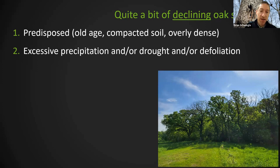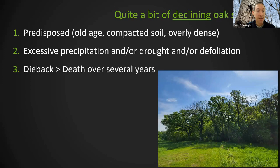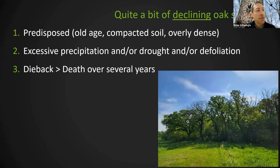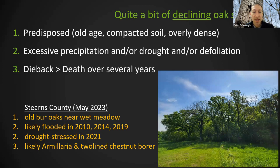Then you have something that kicks off the decline — an inciting agent. Frequently it's excessive precipitation and/or drought, or defoliation by things like forest tent caterpillar. After that kickoff starts, you get symptoms developing and attack from secondary pests — two-lined chestnut borer, armillaria, bronze poplar borer — those are frequently the final death knell of these trees. But before they happen, you need these forests to be predisposed, and you need some agent like extreme drought to kick it all off.